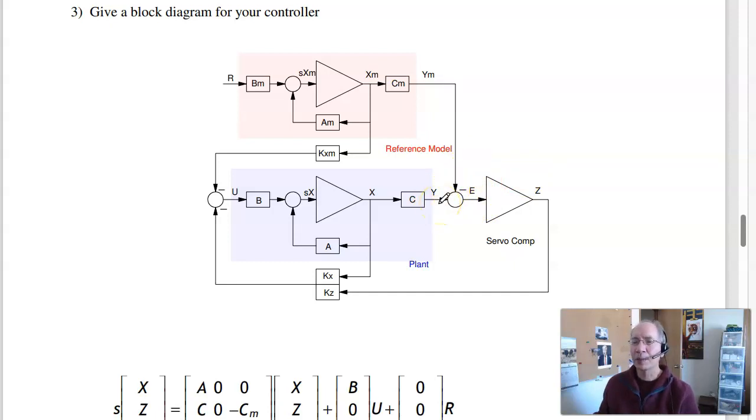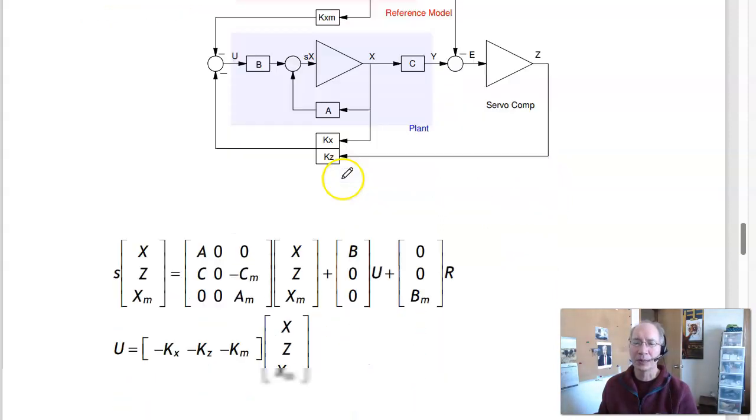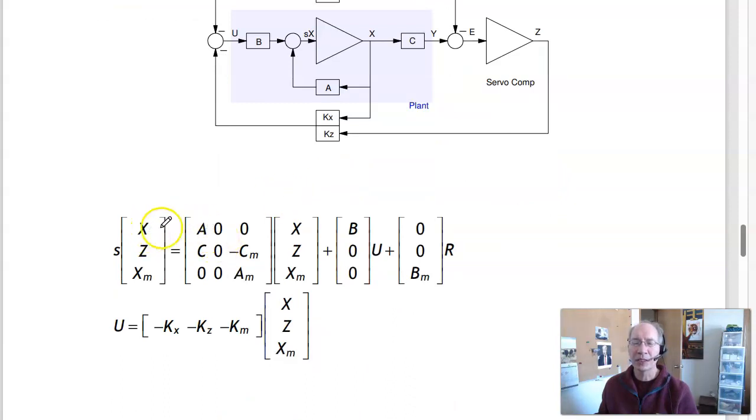Come up with the optimal feedback gains, doing the loop transfer recovery, where I want to minimize driving this to zero quickly without using too much input. So the first approach is form the augmented system. Here's the plant, the reference model, the servo-compensator, input from u, input from r, and here's my full state feedback.